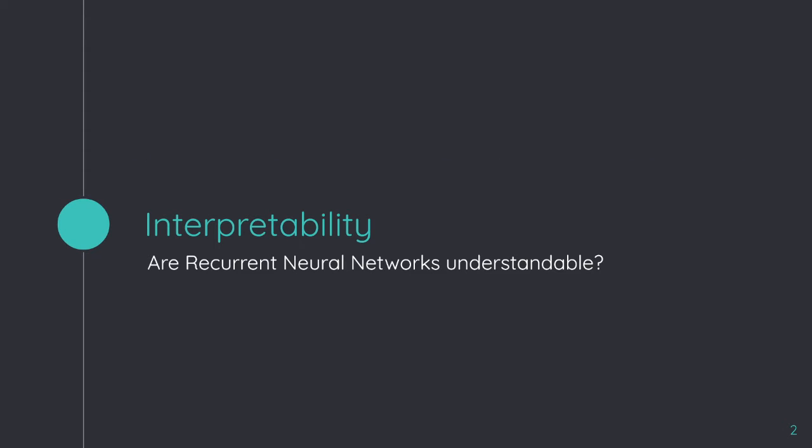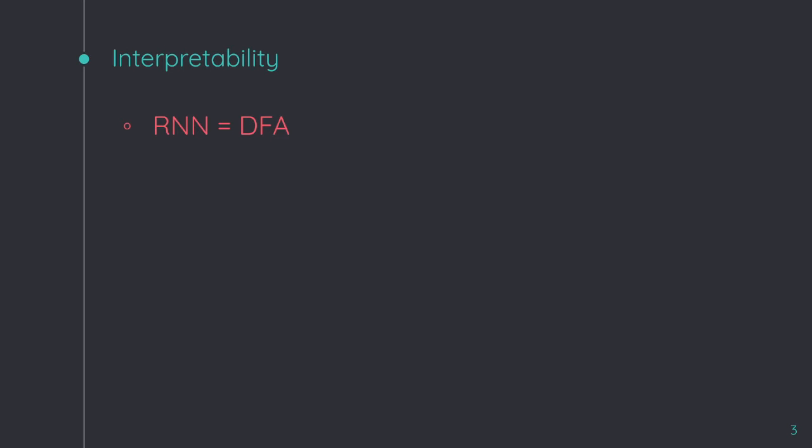To get started, I would like to introduce the concept of interpretability. Do you think that recurrent neural networks are understandable or just a black box model? There exist some techniques that provide interpretability when we talk about machine learning, but it is still difficult to find a good approach to understand the internal mechanisms of a recurrent neural network. We work with a simple approach to find this interpretability.